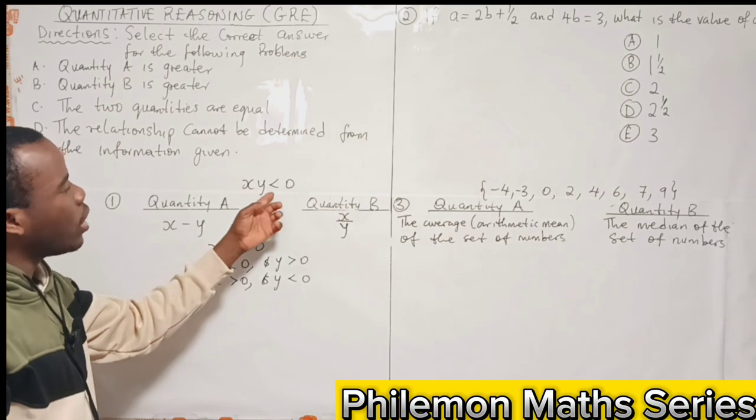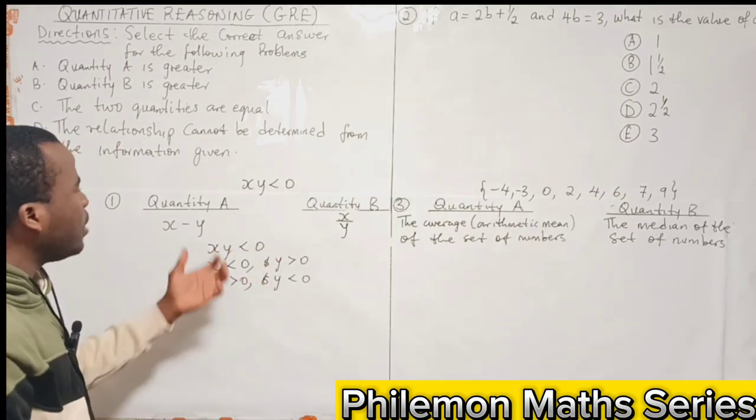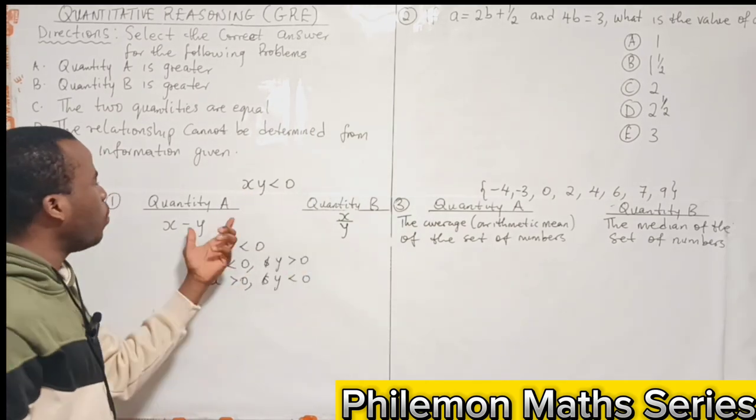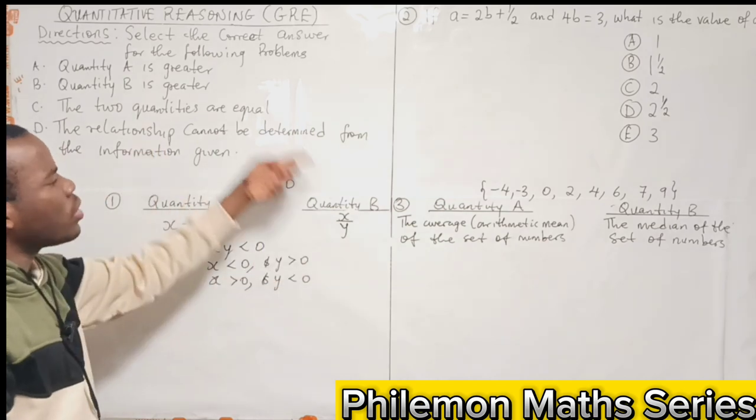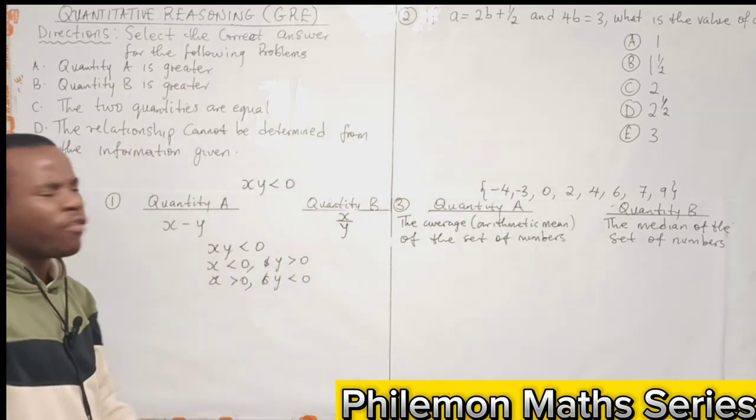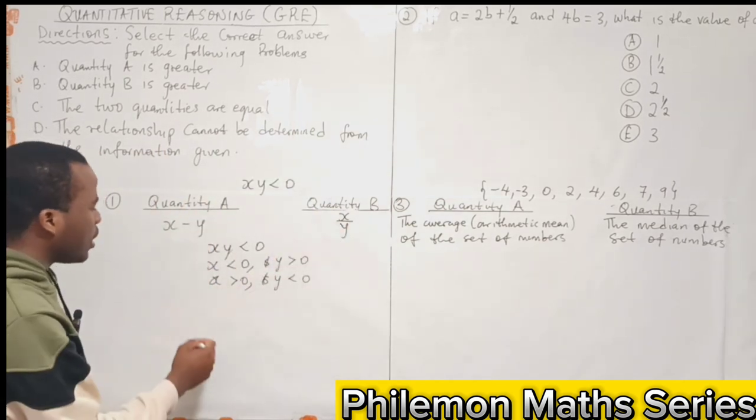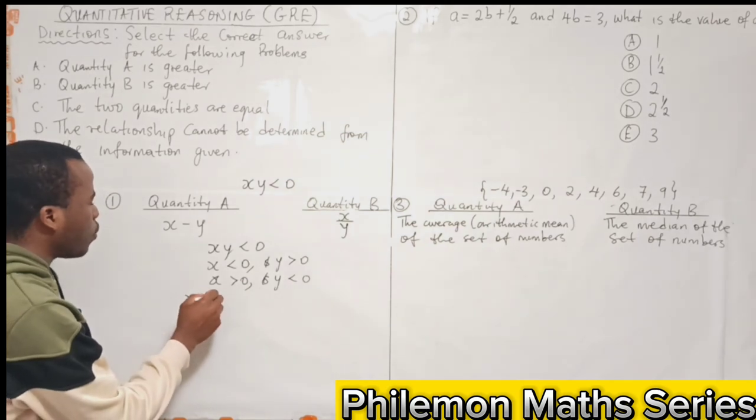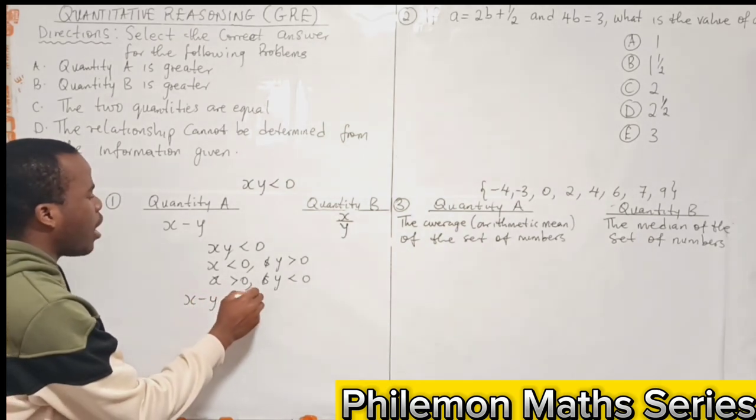Now the best way I think to approach this problem is to assume that both quantities are equal and see what you get from it. So if you assume both quantities are equal, we have that x minus y is equal to x over y.